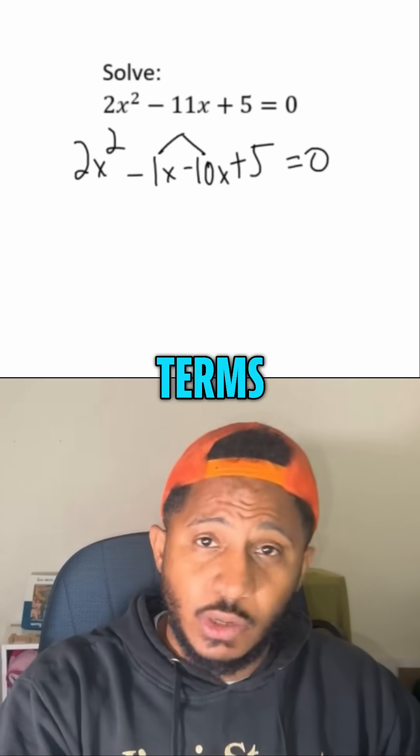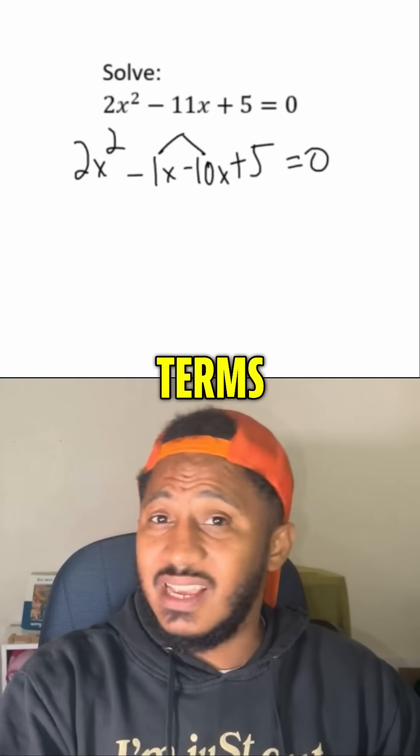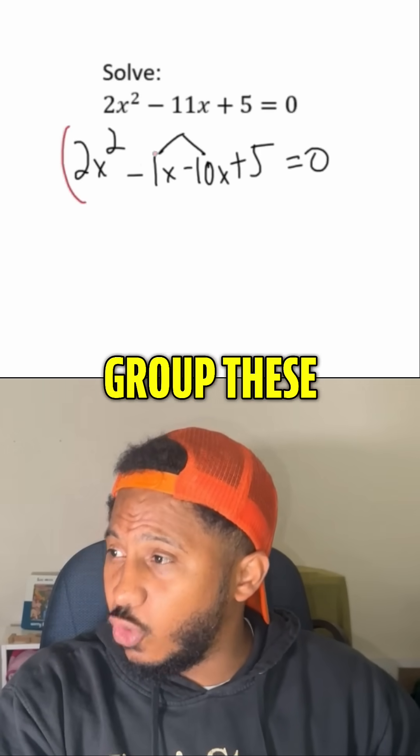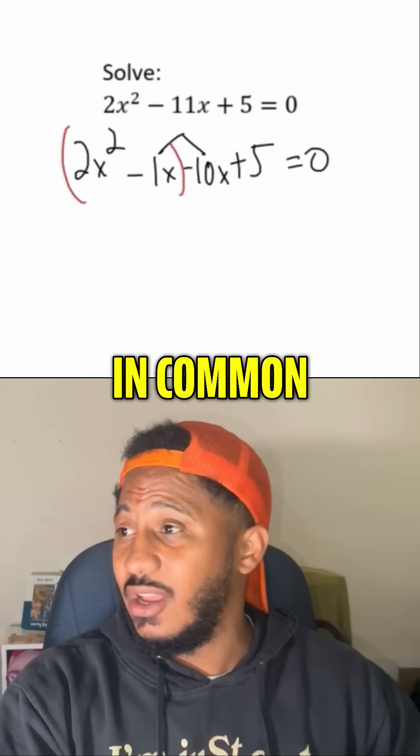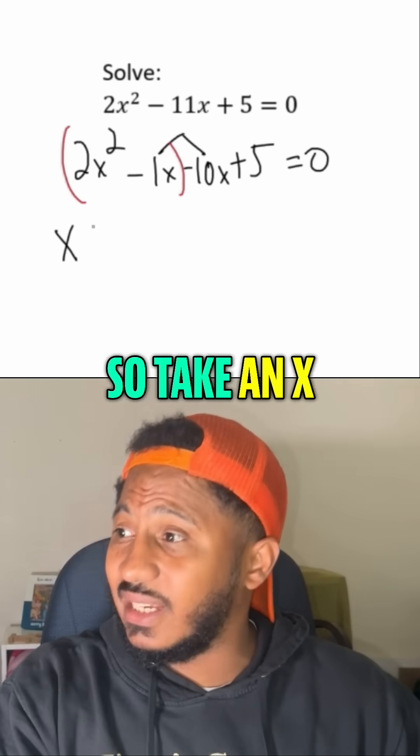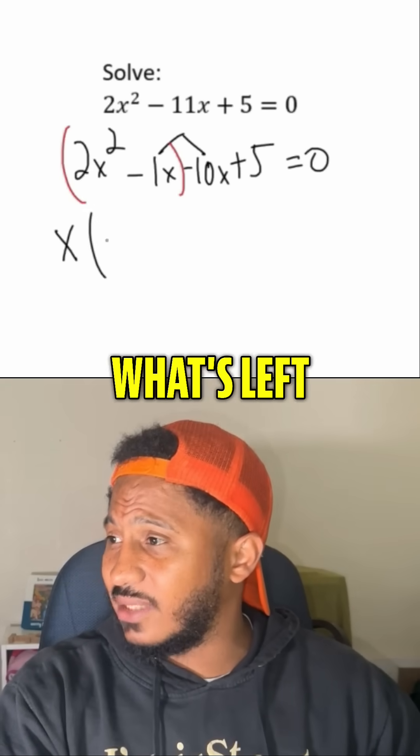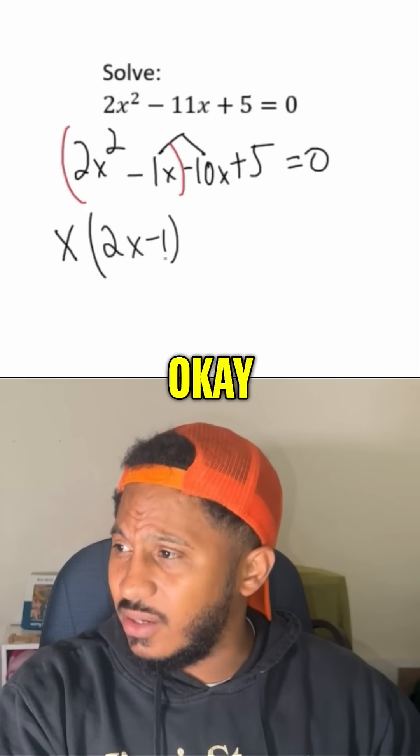And now instead of three terms, we have four terms. And how do we factor four terms is by grouping, all right? So group these first two. What's their GCF? What do they have in common? Well, they both have an x in common. So take an x off of each. What's left? Well, 2x minus 1, okay.